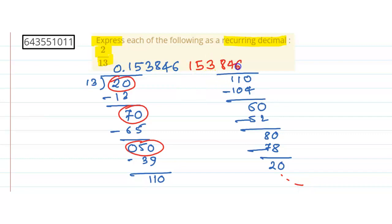8 4 6, again so on. See 1 5 3 8 4 6. This is the recurring group of digits.